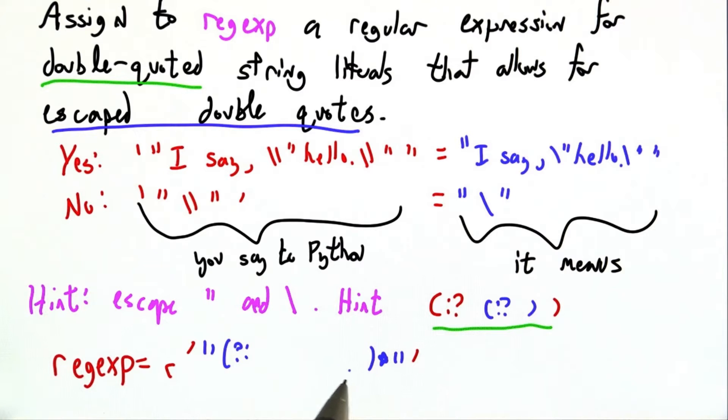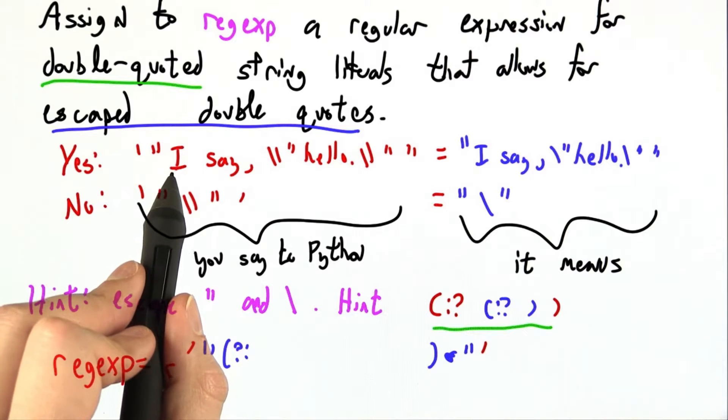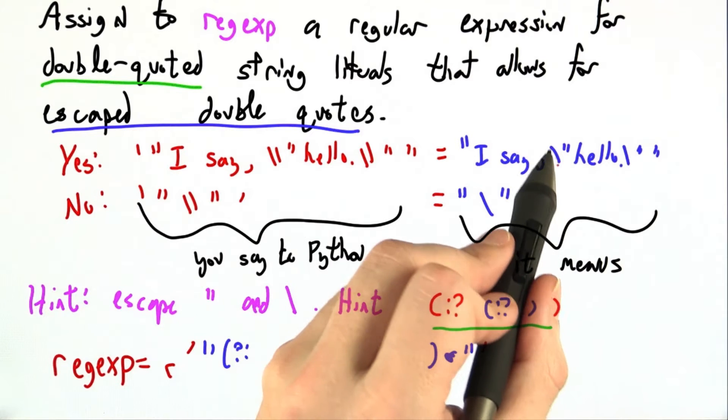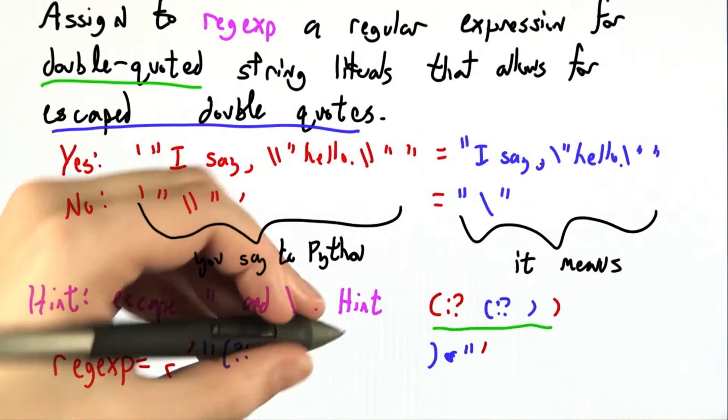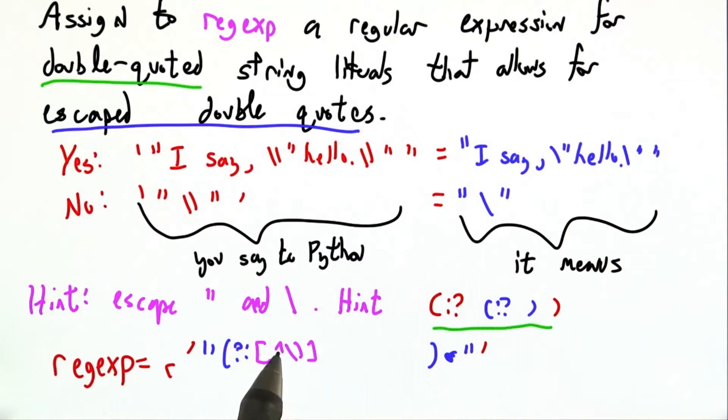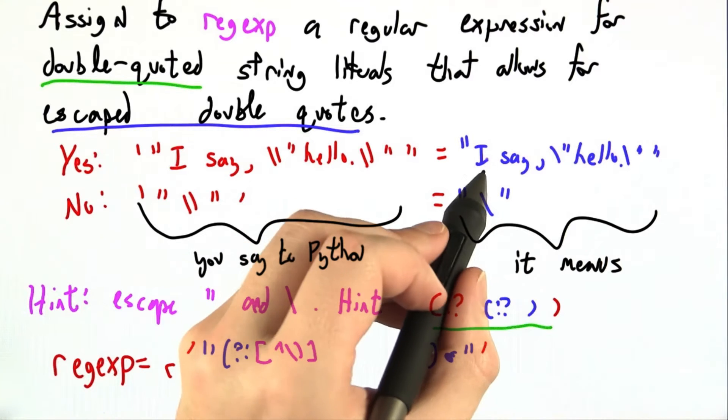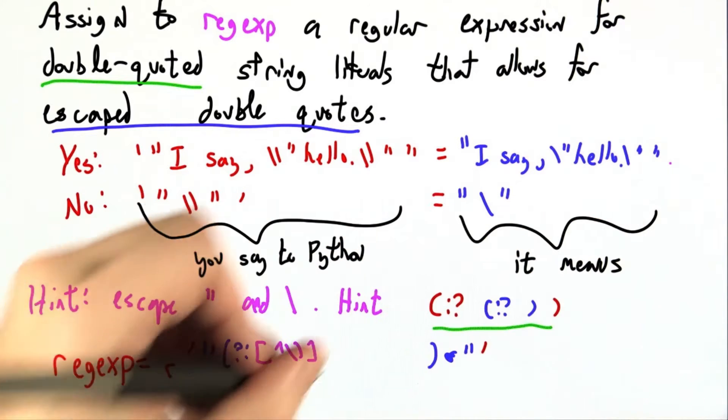Whatever it is, it's going to be zero or more of something. And as we're going across the string, there's sort of backslashes which are important and everything else which is not so important. So if there's any character that's not a backslash, and here I'm escaping the backslash, we can just read right over it. That's no problem inside our string.